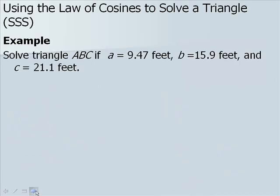Now let's use the Law of Cosines to solve a triangle given side-side-side. We have side A is 9.47 feet, side B is 15.9 feet, and side C is 21.1 feet. We'll use the first form of the Law of Cosines.